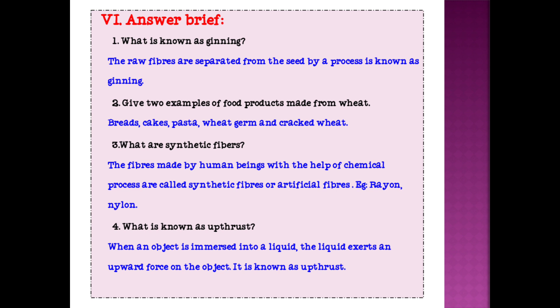Answer brief. First question: what is known as ginning? The raw fibers are separated from the seed by a process is known as ginning. Give two examples of food products made from wheat. Breads, cakes, pasta, wheat germ and cracked wheat. Here more than two examples are given. You can take any two.